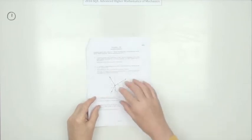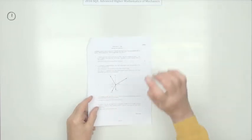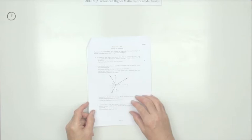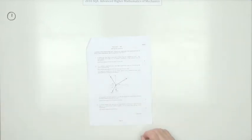So question 1 from the 2016 Advanced Higher Mathematics of Mechanics. That little combination of a bit of advanced higher maths and a bit of advanced higher physics. For three marks, what does it say?